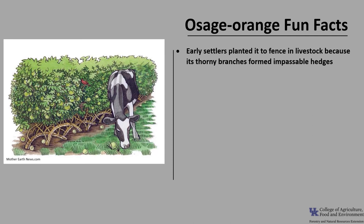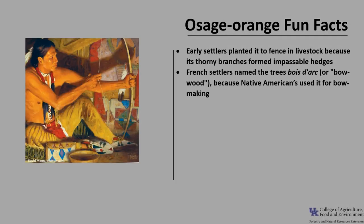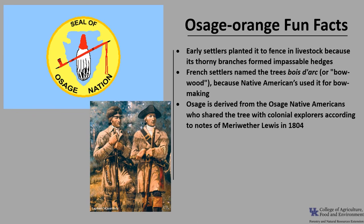Early settlers of the Great Plains used Osage Orange for hedgerows — the thorny branches formed impassable hedges used to fence in livestock. The early French settlers named the trees Beau d'Arc or Bow Wood because they observed the wood being used for bow making by Native Americans. The common name Osage is derived from the Osage Native Americans, who shared young plants with early colonial explorers according to the notes of Meriwether Lewis in 1804.